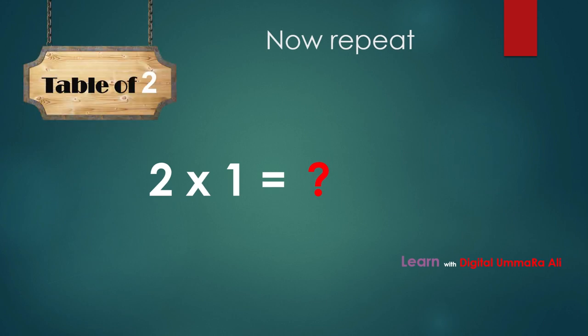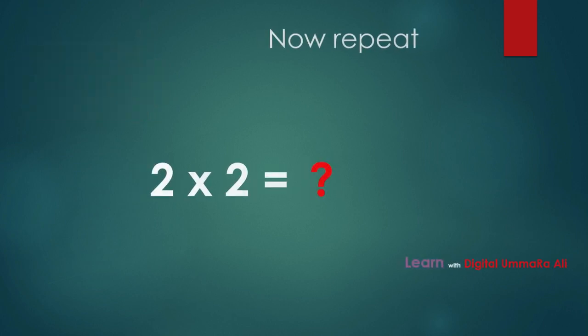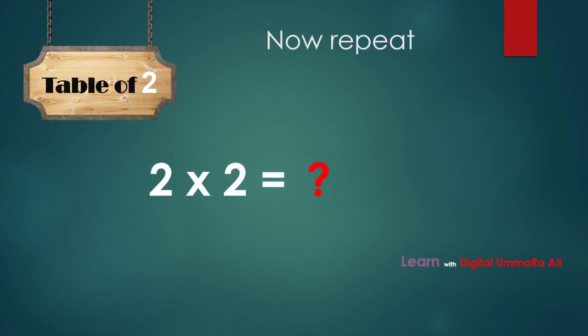Now let's repeat the table of two. Two ones are... yes, two ones are two. Two twos are... yes, two twos are four.